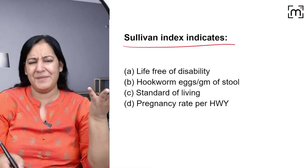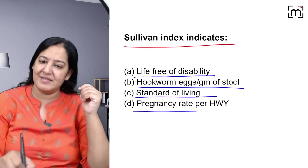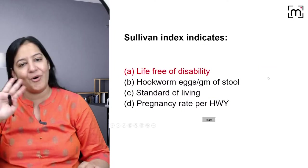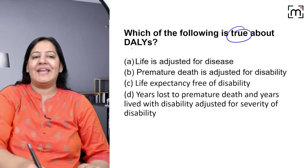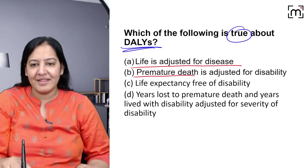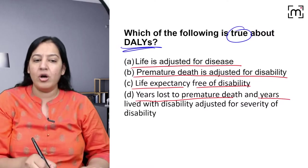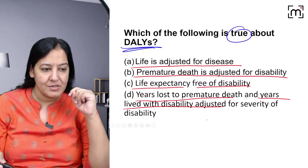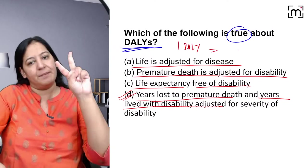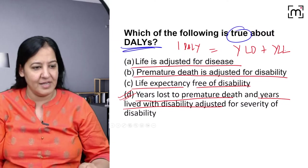Next question: what is the Sullivan Index? Options: a life free of disability, hookworm eggs per gram of stool, standard of living, or pregnancy rate per hundred woman-years. Of course, the answer is A — a life free of disability. These are previous year questions from various exams. Next: which of the following is true about DALY? It is the summation of two things — years lost due to premature death plus years lost with disability. Answer is D — absolutely correct.